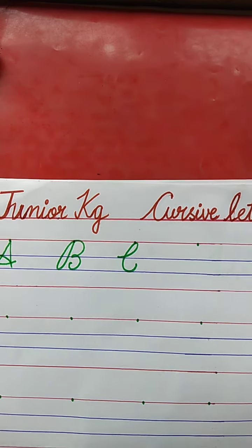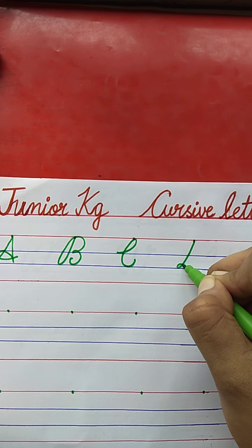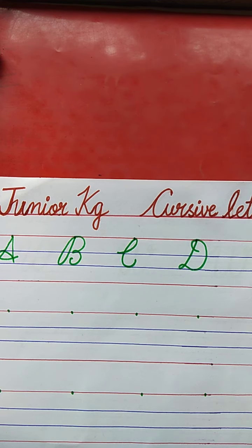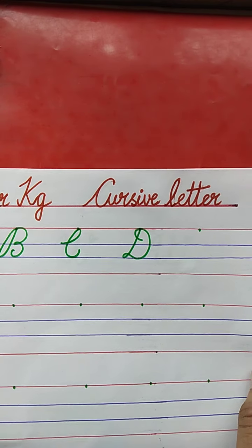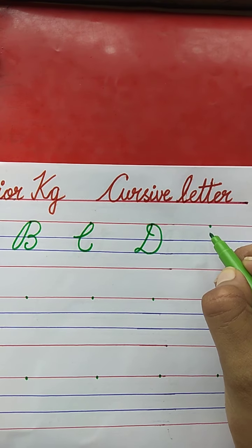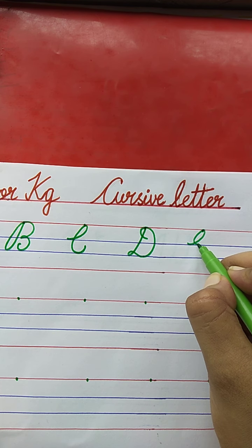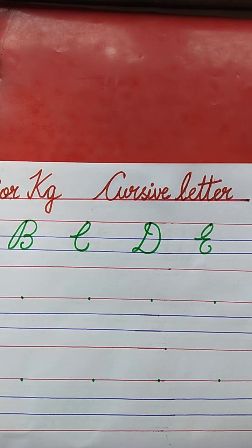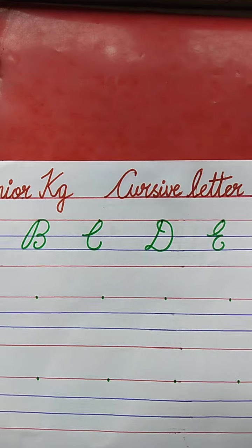Speak with me. Now the next letter is D. D for Duck. The spelling of Duck: D-U-C-K. Now tell me the next letter. E. E for Elephant. The spelling of Elephant: E-L-E-P-H-A-N-T.